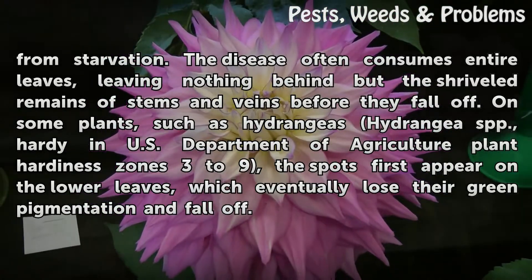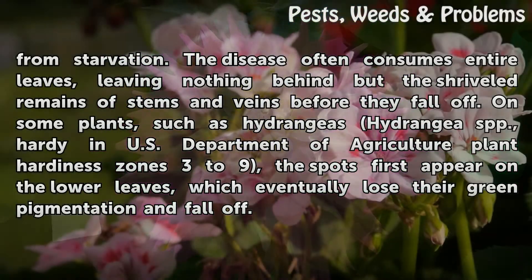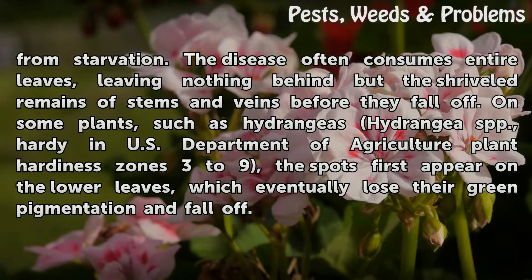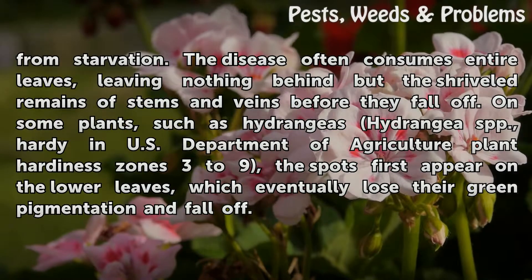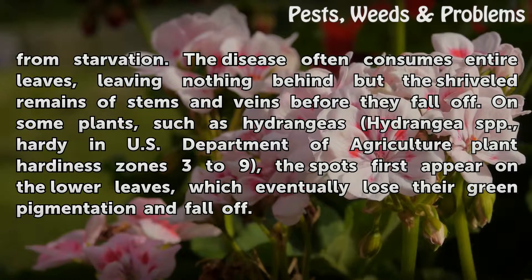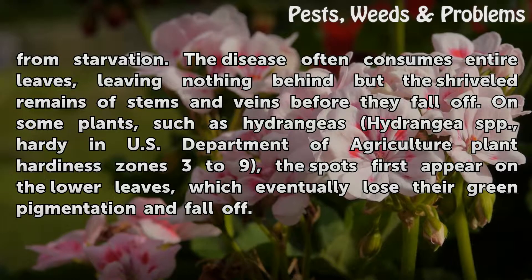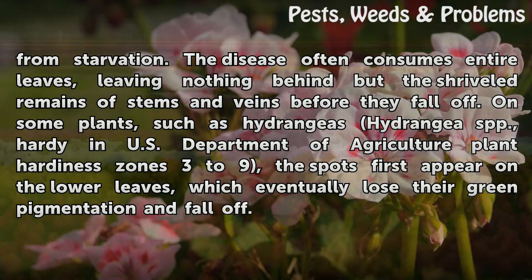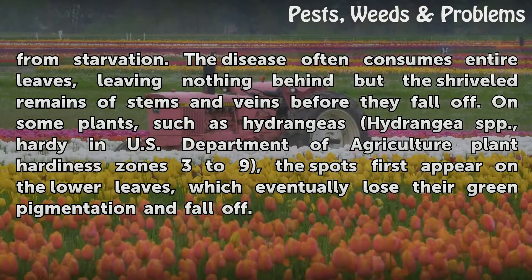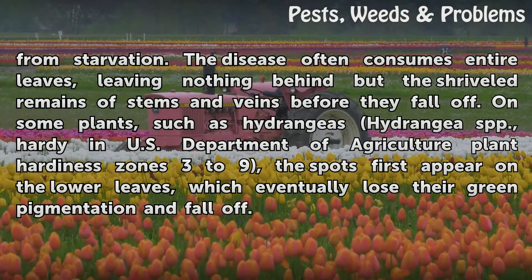The disease often consumes entire leaves, leaving nothing behind but the shriveled remains of stems and veins before they fall off. On some plants, such as hydrangeas (Hydrangea spp.), hardy in U.S. Department of Agriculture plant hardiness zones 3 to 9, the spots first appear on the lower leaves, which eventually lose their green pigmentation and fall off.